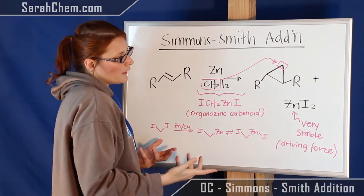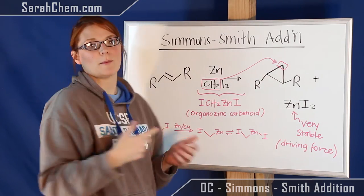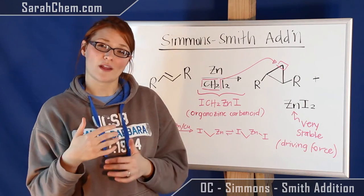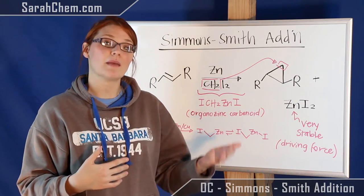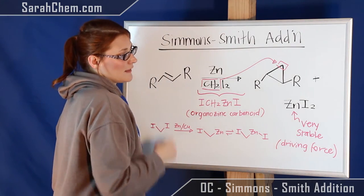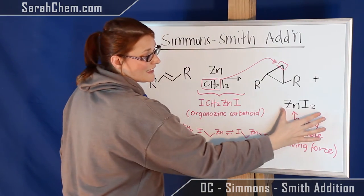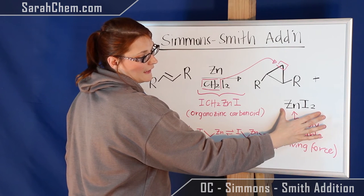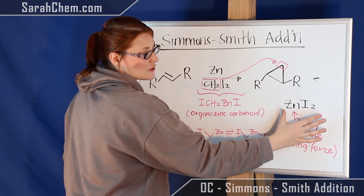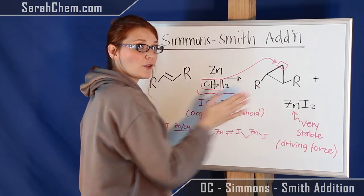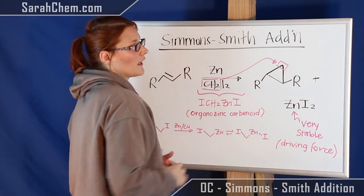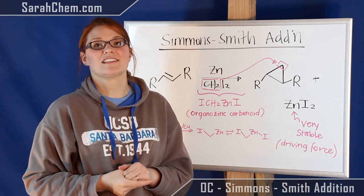Now oftentimes we realize that when we're talking about a three-membered ring, it's got a lot of strain, and so they're not usually favorable to make. But one thing that does make this reaction drive forward is actually the formation of the zinc iodide that we have right over here. So this, surprisingly, is going to be your driving force, and that's how we're going to be able to make these cyclopropane-containing compounds.